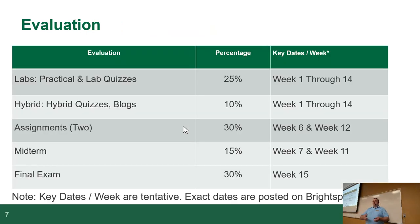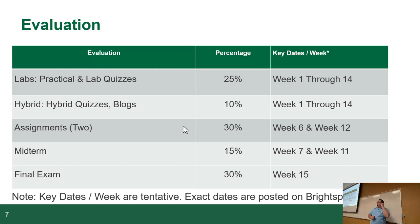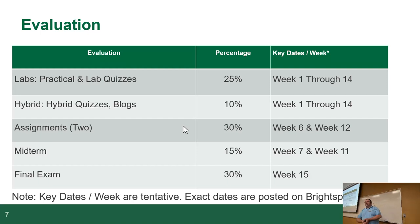Your grade breakdown: labs are worth 25% — that's 2.5% per lab. Hybrids are 10%, divided across four of them. There are two assignments worth 30% of your grade, and those are group work. The midterm is 15% and the final exam is 30%. That's just how the breakdown goes.